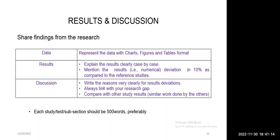Coming to the very important section: results and discussions. It is the heart of the research article. Because our article is a research article — meaning we are publishing our results, we are getting publication because of our results. This section we need to write very carefully — very, very carefully.